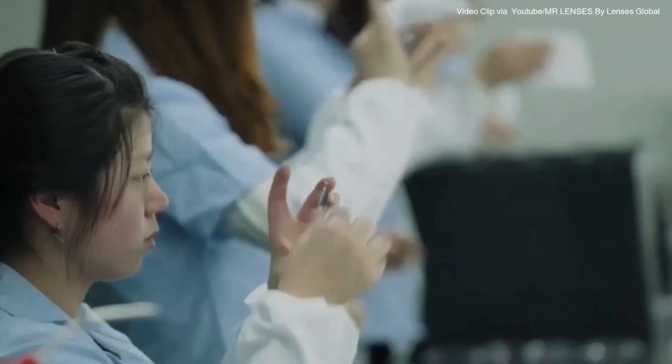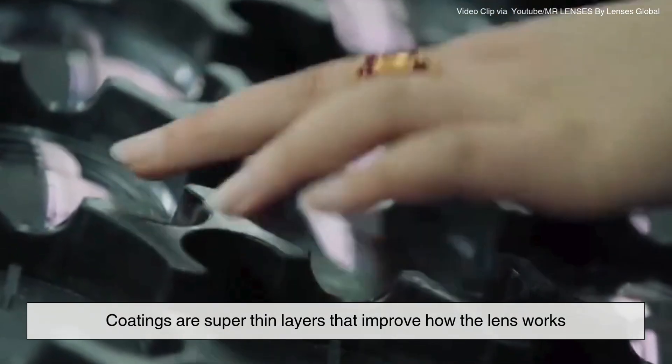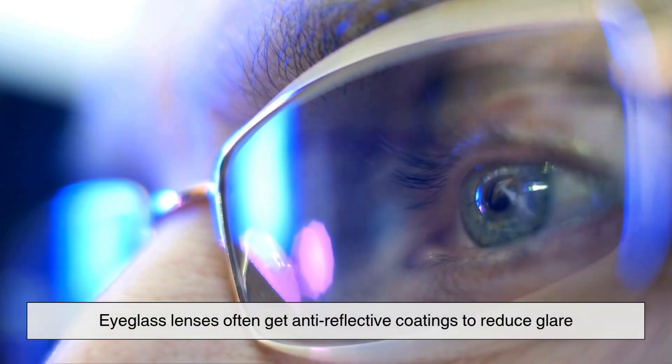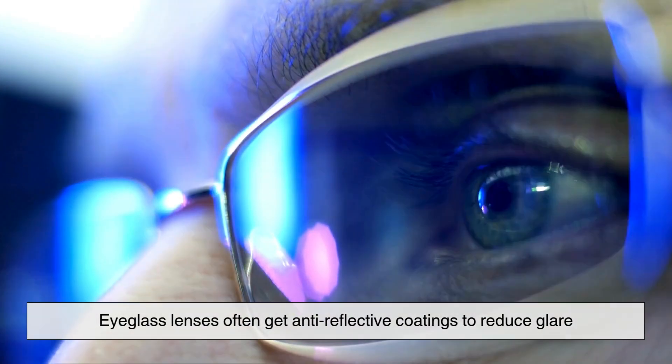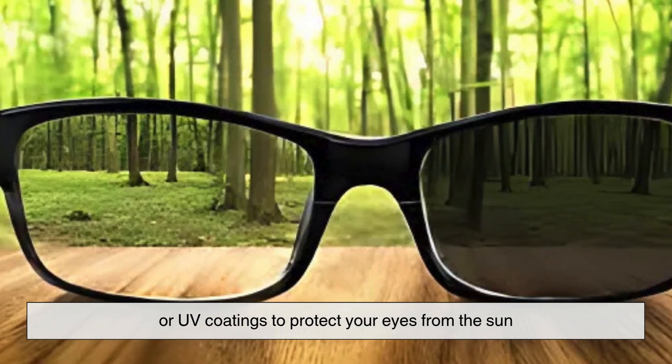Next, most lenses get coated. Coatings are super thin layers that improve how the lens works. For example, eyeglass lenses often get anti-reflective coatings to reduce glare, or UV coatings to protect your eyes from the sun.